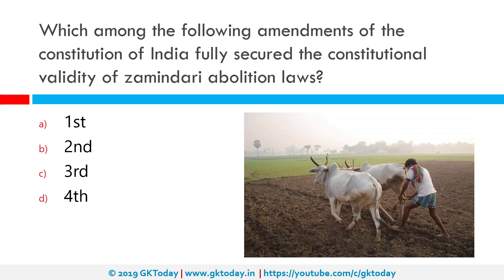Which among the following amendments of the Constitution of India fully secured the constitutional validity of Zamindari abolition laws? The correct answer is the First Amendment. The Zamindari system was mostly abolished in Independent India soon after its creation, with the First Amendment to the Constitution of India, which amended the right to property as in Articles 19 and 31. This allowed the states to make their own Zamindari abolition acts.